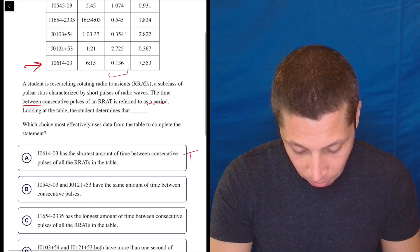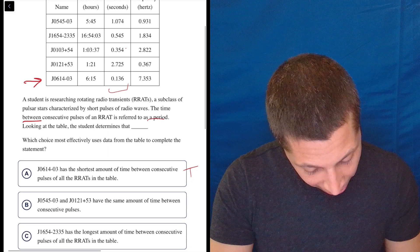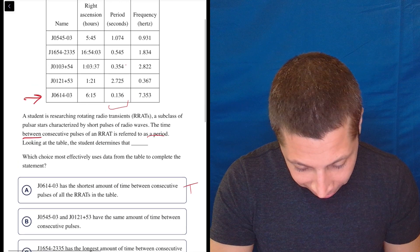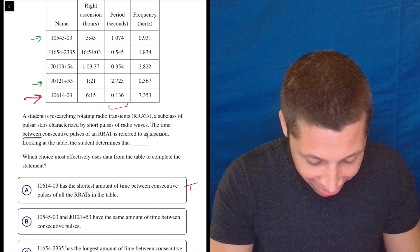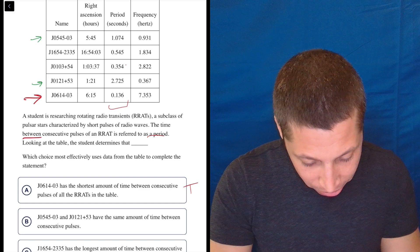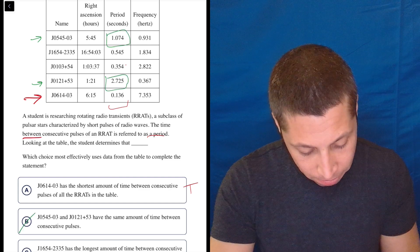Okay, let's move on. 0545 and 0121. So, 0121, 0545. Have the same amount of time between consecutive pulses. That's this and this. No, those are different numbers. False.